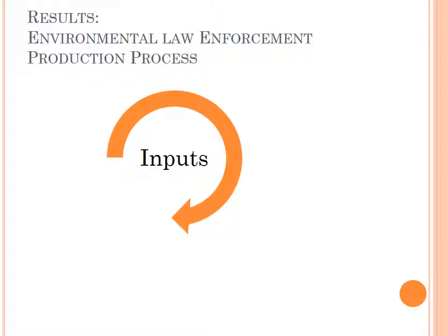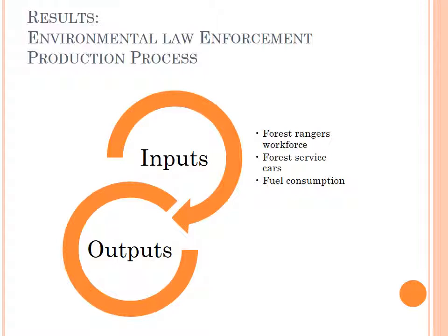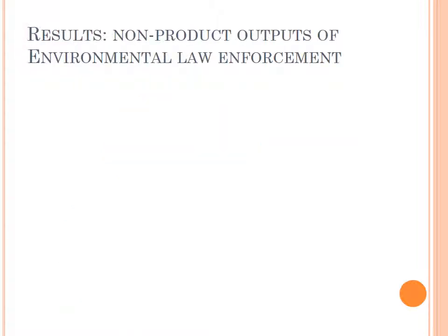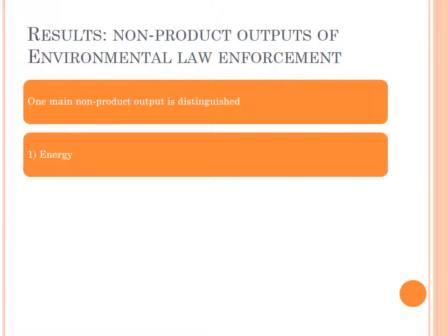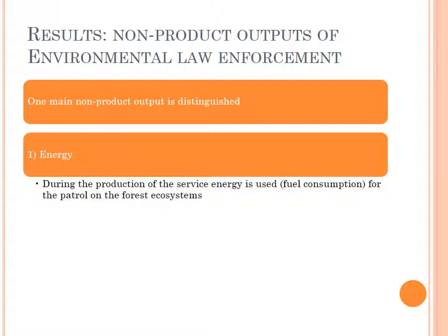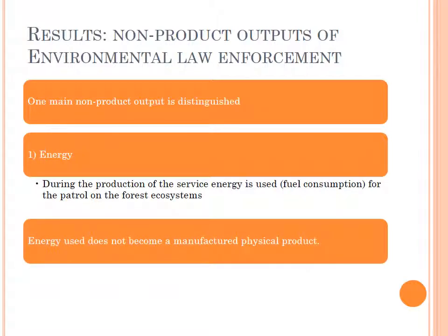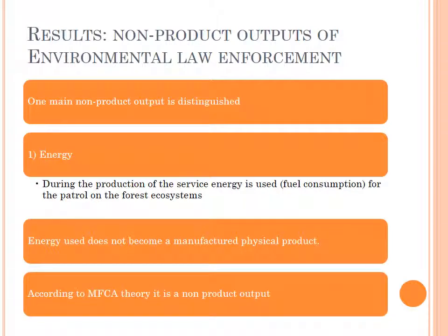The environmental law enforcement production process works as follows. The inputs are mainly forest rangers' workforce, forest service cars and fuel consumption. The outputs are patrolling in forest ecosystems, controlling and prosecution for cases in which a forest crime has occurred, and CO2 emissions. One main non-product output is identified: energy. During the production of this service, energy is used as fuel consumption for patrolling forest ecosystems. The energy used does not become a manufactured physical product, and according to MFCA theory, it is a non-product output.